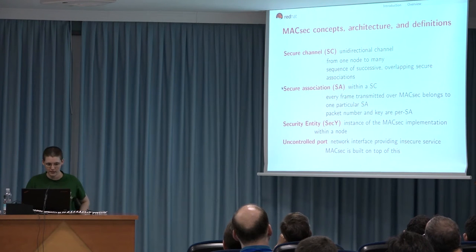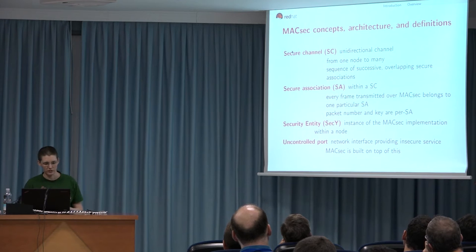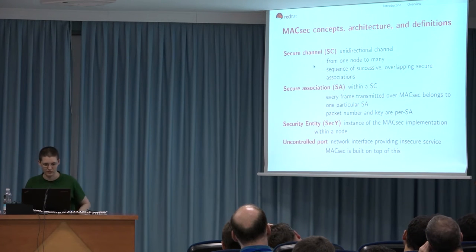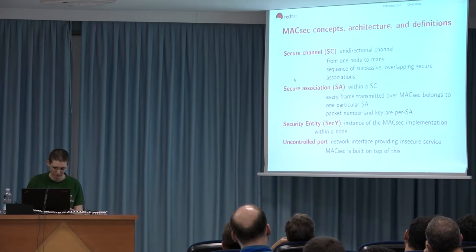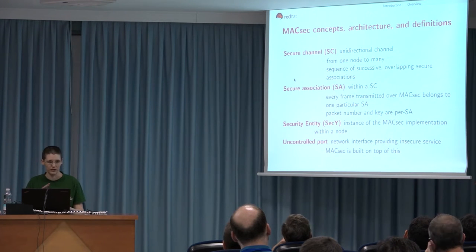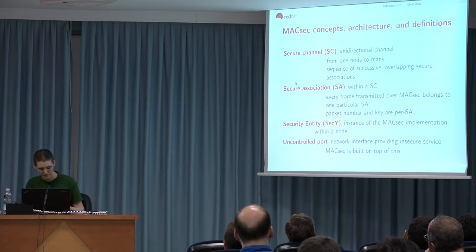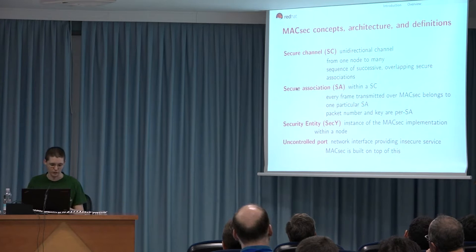The main concepts in MACsec are the secure channel, which is a unidirectional transmit channel from one node to many. It's covered by a sequence of successive overlapping secure associations. The secure association is what is used to transmit every MACsec frame, with the main parameters being the packet number and the key. The security entity is an instance of the MACsec implementation, linked to your transmit secure channel — one security entity per transmit channel, but you can have many receive channels. The uncontrolled port is the network interface providing the insecure service.